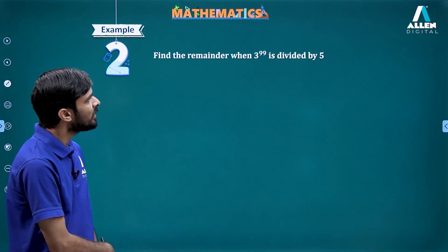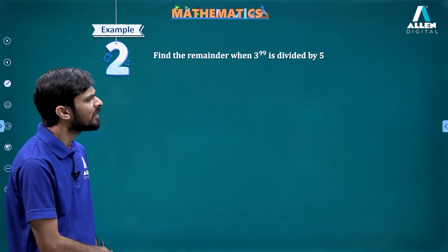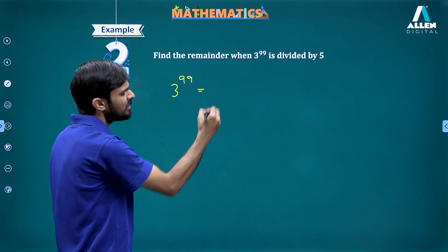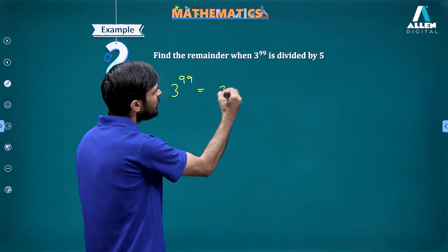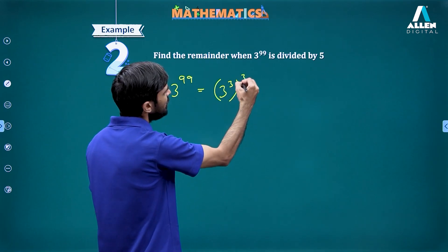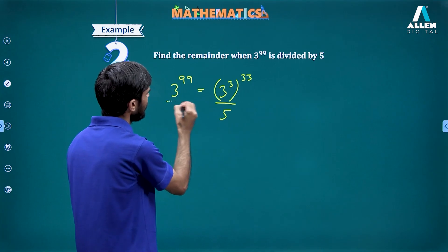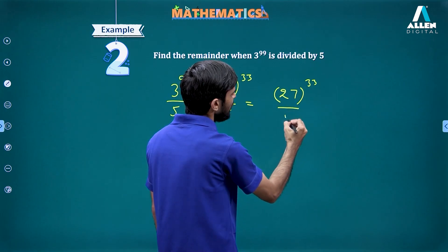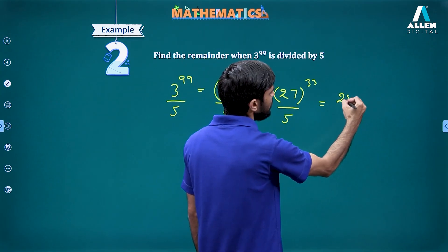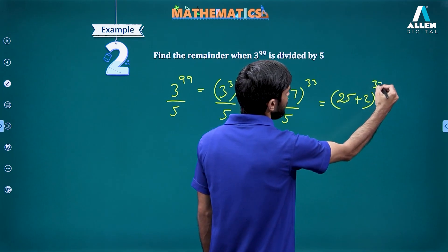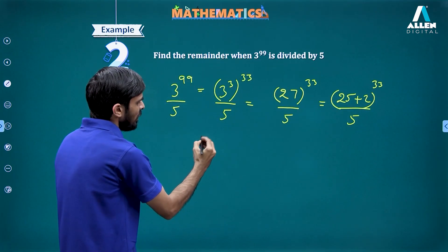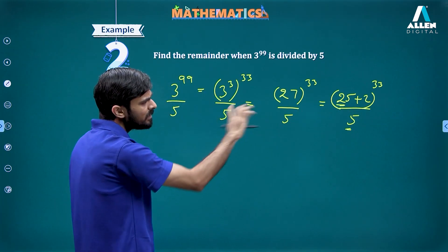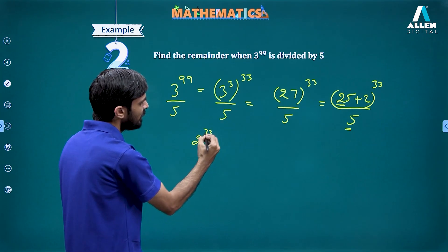Let's find the remainder when 3 to the power 99 is divided by 5. We can write 3^99 as (3^3)^33, which is 27^33. Dividing 27^33 by 5, we rewrite 27 as 25 + 2, giving us (25 + 2)^33 divided by 5. Since 25 is divisible by 5, only 2^33 remains relevant.